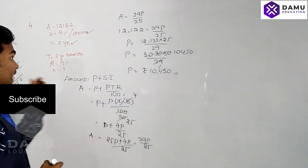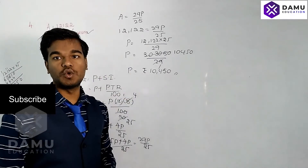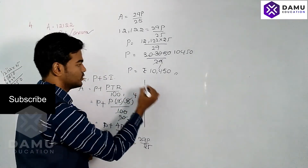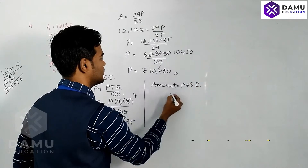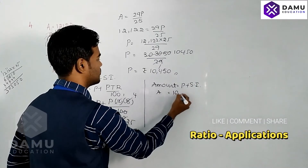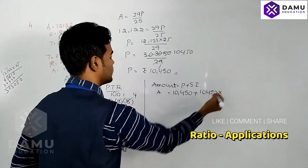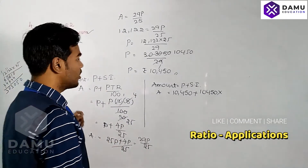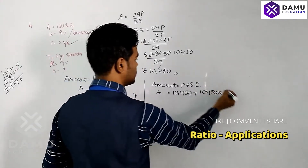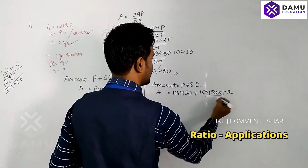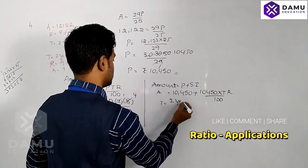We have calculated the principal from the first given data. Now we substitute this principal value into the next part. Amount = Principal + Simple Interest, where Principal is 10,450 rupees. Amount = 10,450 + 10,450 × T × R / 100. Now let's find T × R / 100, where time is two years and eight months.